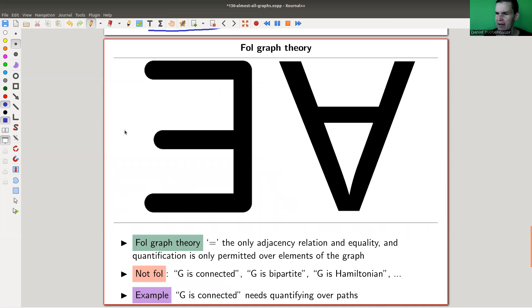Let me define what first-order logic graph theory is. It's actually a very simple theory. If you analyze the theorem further, it's maybe not surprising anymore because the theory is ridiculously simple. First-order logic graph theory: you only have the adjacency relation - whether two vertices are connected or not - and the equality relation - whether two vertices are the same. Quantifying is only allowed over elements of the graph. That's the first-order thing - you only quantify over elements of the graph.